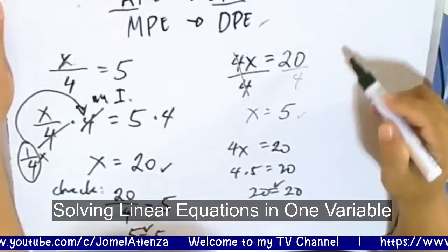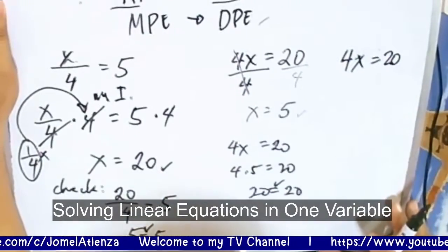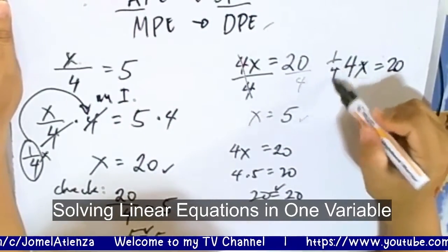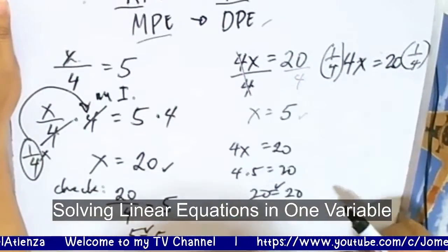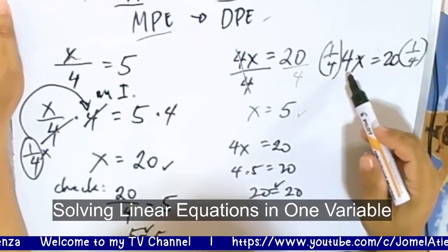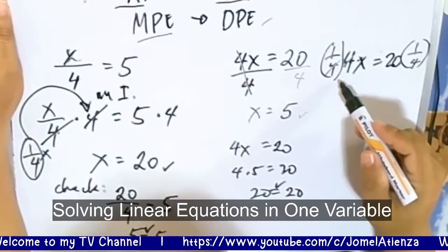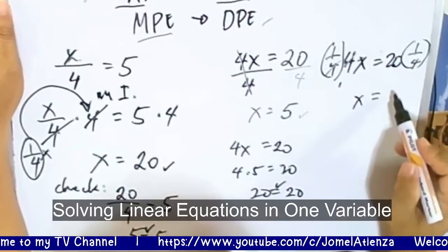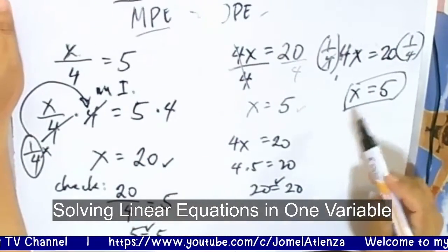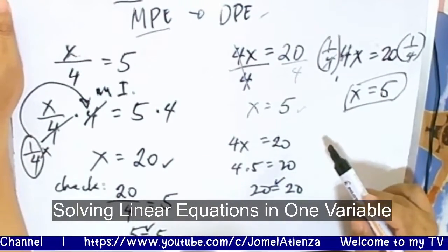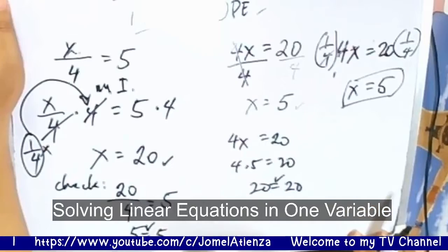Our original equation is 4x equals 20. Alternatively, if we multiply both sides by one-fourth — because one-fourth is the multiplicative inverse of 4 — the 4 cancels out, giving us x is equal to one-fourth of 20, which is 5. The value of x is the same; the solution method may differ but the result is identical.